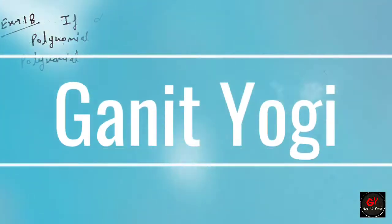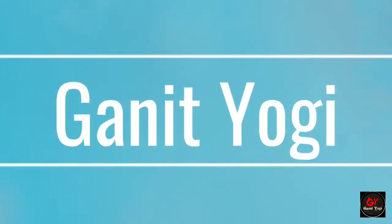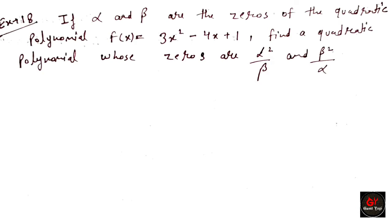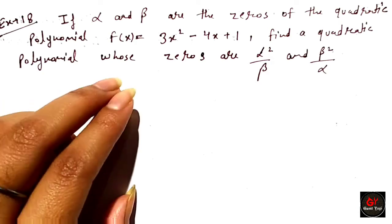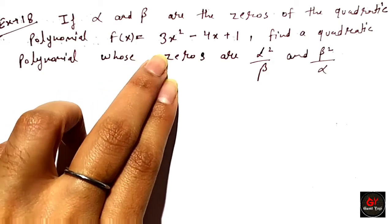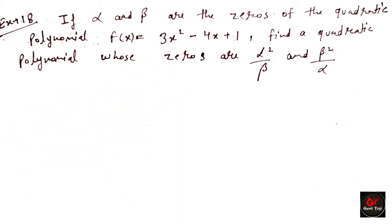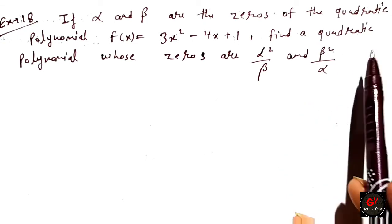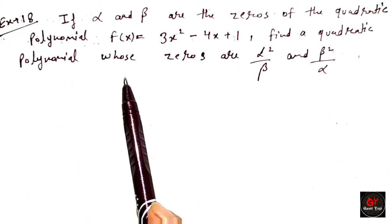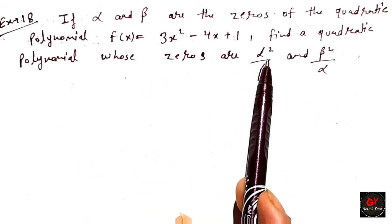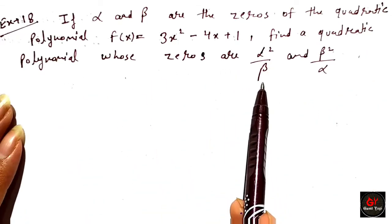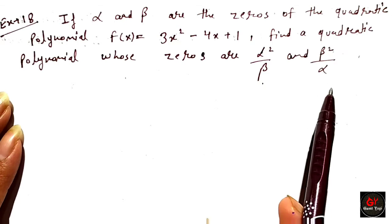Hello guys, example number 18: if alpha and beta are the zeros of the quadratic polynomial f(x) equals 3x squared minus 4x plus 1, find the quadratic polynomial whose zeros are alpha squared over beta and beta squared over alpha.